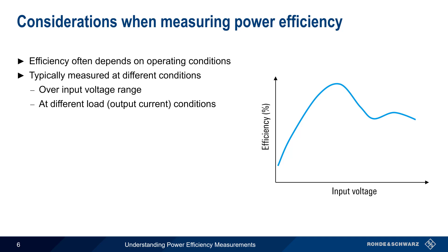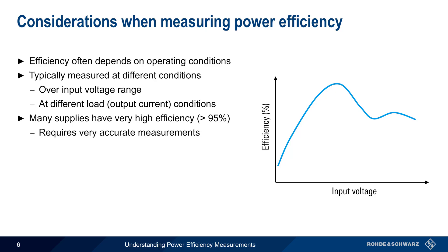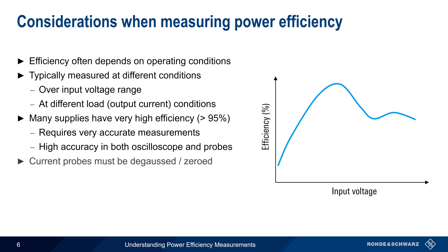It's important to remember that many modern power supplies have very high efficiency, so accurate measurements of voltage and current are needed to determine the very small difference between output and input power. Therefore, the oscilloscope and the probes used in power efficiency measurements should be both highly accurate and have the lowest possible noise. As with other current measurements, the current probe should be properly degaussed and zeroed, and the voltage and current probes should be properly deskewed in order to obtain precise power values. Please see the separate presentations on current probes and deskewing if you'd like to learn more about these topics as well.